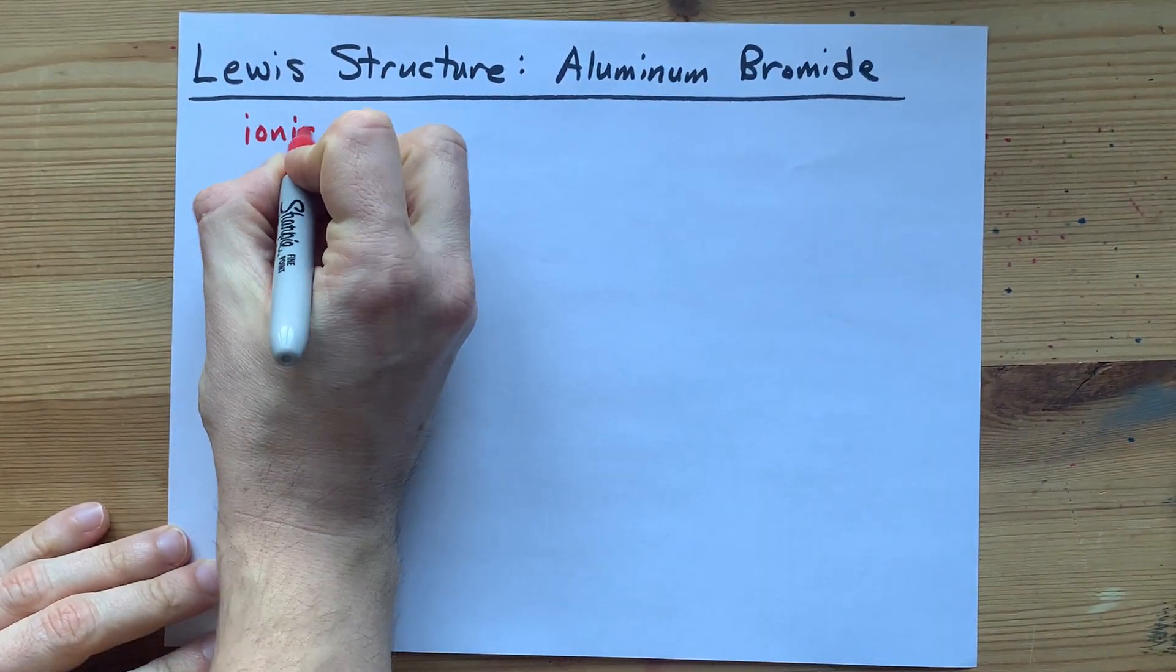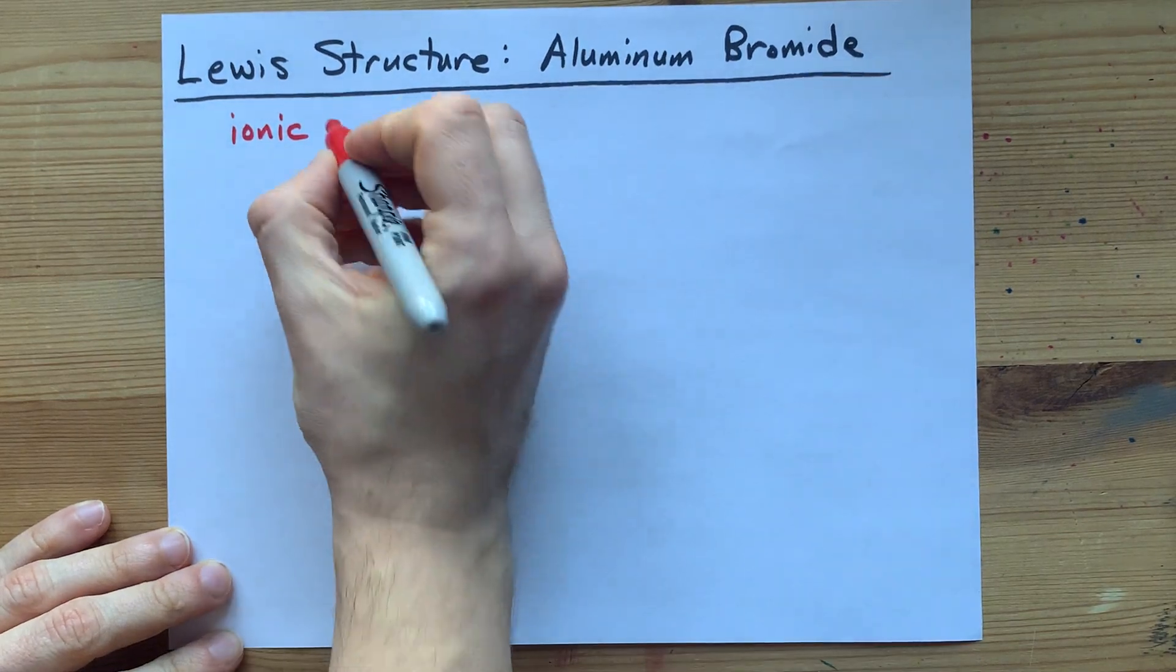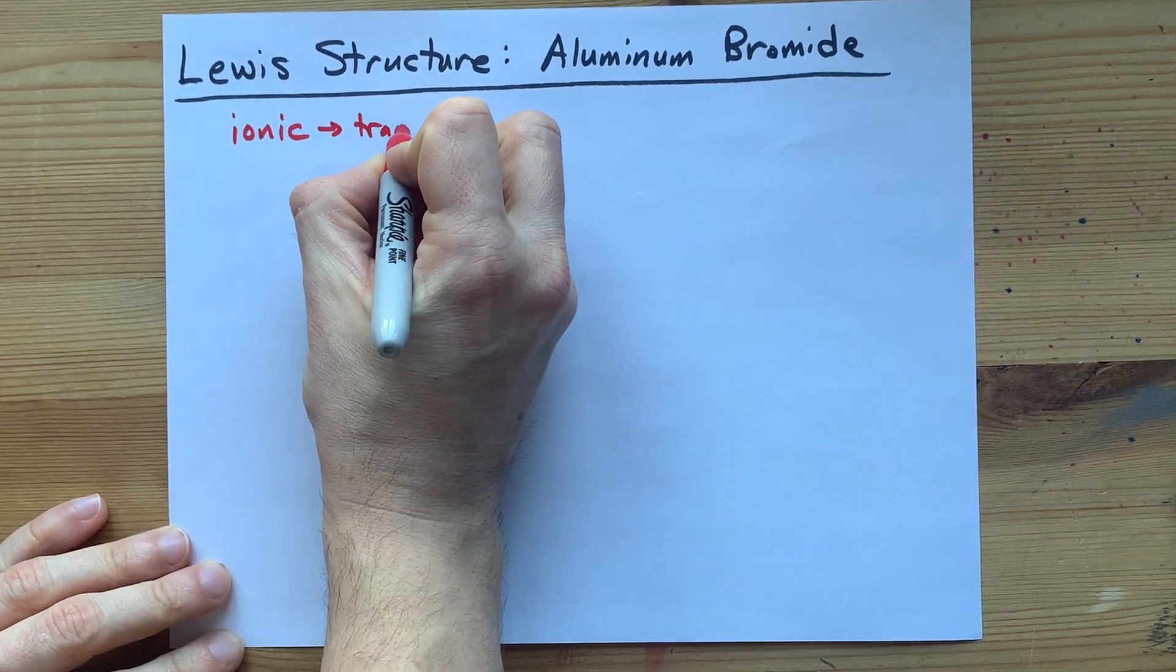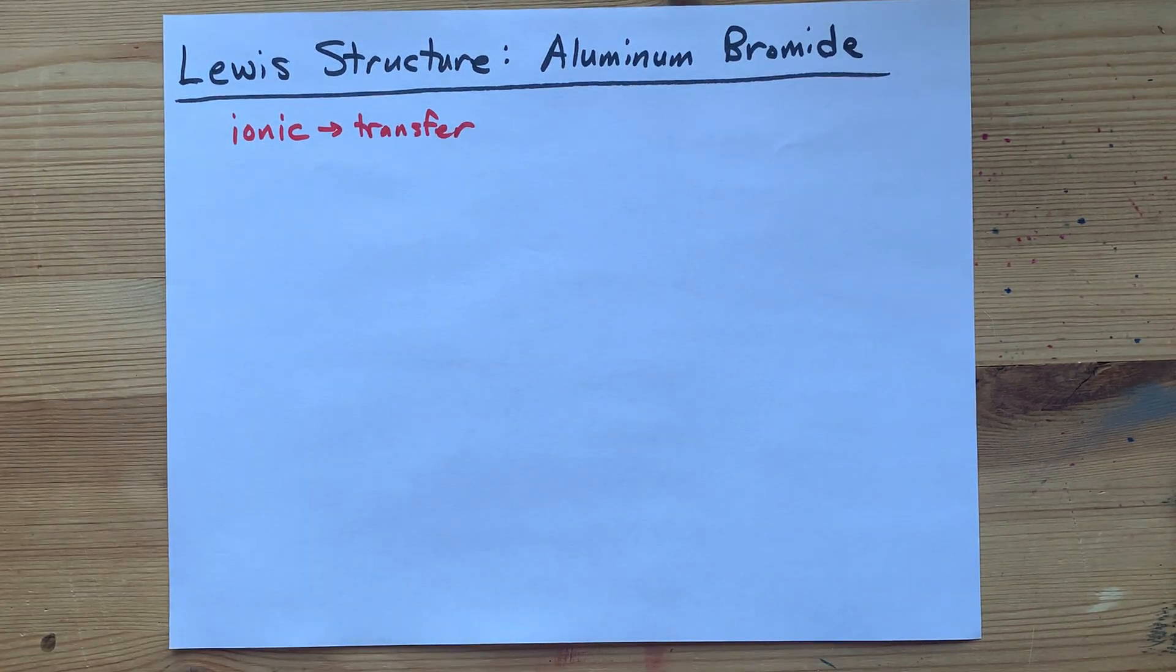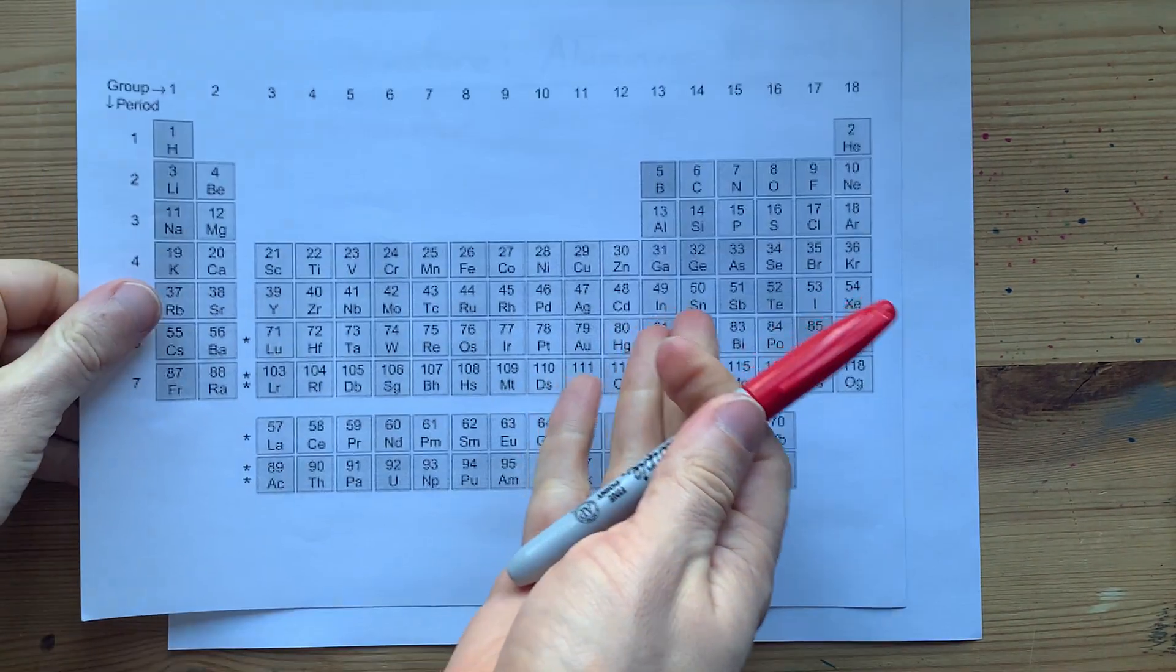that makes its product an ionic compound, and that occurs because electrons are transferred from the metal to the non-metal. What electrons?